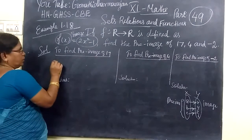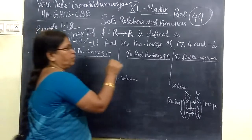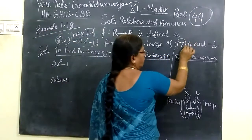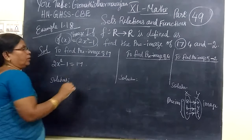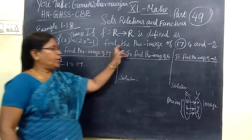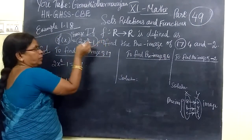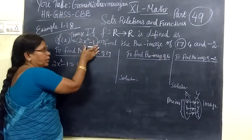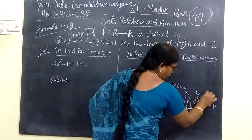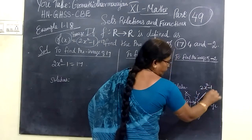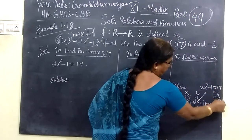Here we have 2x² - 1. We have to find the preimage of 17. The values 17, 4, and -2 are the image values, and we are finding the preimage values. So for 17, we set 2x² - 1 = 17.